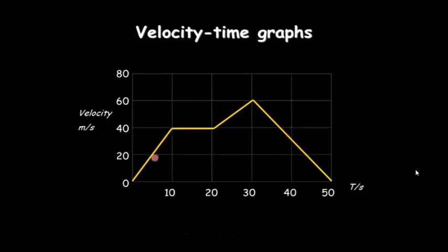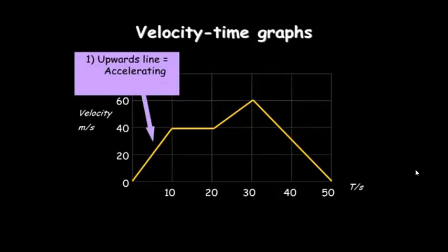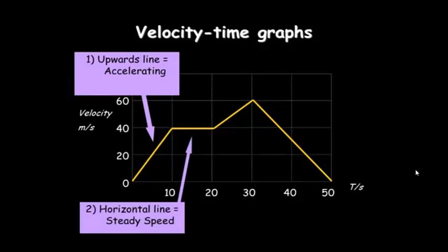So the first section here, it's a steep line going up from 0 to 40. Because we're looking at velocity, it means it's changing velocity, it's getting faster, and the special word for that means accelerating. So it's accelerating from 0 to 40 in 10 seconds. A horizontal line here, on the other graph it meant stationary, but it now means it's going at a steady velocity of 40. So during this period here, it's traveling a steady speed of 40 meters per second.